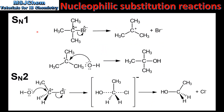We'll end the video by having a quick look at the SN1 and SN2 mechanisms. In both these reactions the nucleophile is a hydroxide ion. The reactants are halogenoalkanes and the products are alcohols. The SN1 mechanism is a two-step mechanism, whereas the SN2 mechanism is a one-step mechanism. The SN1 mechanism involves the formation of a carbocation intermediate, and the SN2 mechanism involves the formation of an unstable transition state.